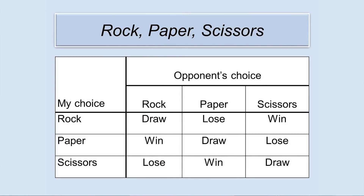The entry in the table shows the result corresponding to those choices by me and my opponent. For rock-paper-scissors, the table would look like this — remembering outcomes are from my perspective, not my opponent's. This is the game where two players reveal either rock, paper, or scissors simultaneously. Paper beats rock, rock beats scissors, and scissors beats paper. So if I choose rock and my opponent chooses paper, I lose; if we both choose rock, we draw; if I choose rock and my opponent chooses scissors, I win. My opponent can draw up a similar table showing the results from their point of view.